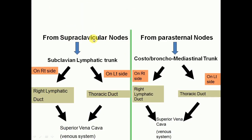From the supraclavicular nodes, lymph travels via the subclavian lymphatic trunk — on the right side draining via the right lymphatic duct into the venous system, and on the left side into the thoracic duct and then the venous system. From the internal mammary or parasternal nodes, lymph travels in the costobronchomediastinal trunk, which on the right drains via the right lymphatic duct and on the left via the thoracic duct, eventually entering the venous system.